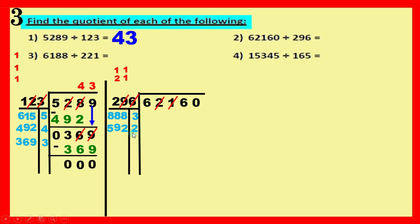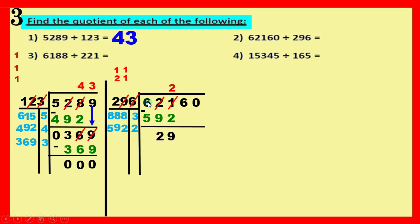Two works, so we write it above, its answer below, draw a line and minus. One minus two — can't do it, borrow one. Borrow from the two, becomes one; one becomes eleven. Eleven minus two equals nine. That digit becomes one. One minus nine — can't do it, borrow one. Six becomes five; one becomes eleven. Eleven minus nine equals two. Five minus five equals zero.